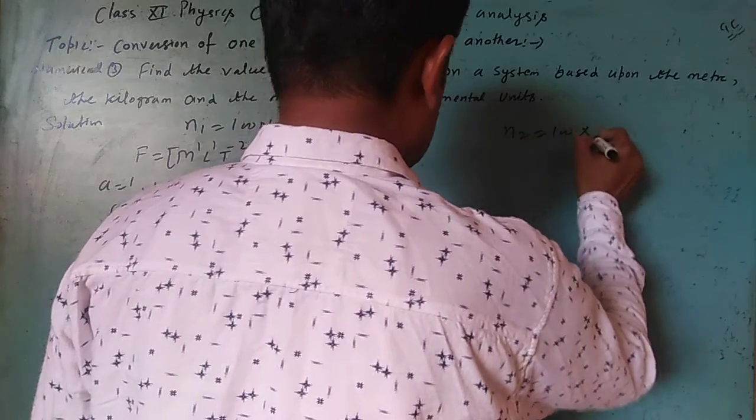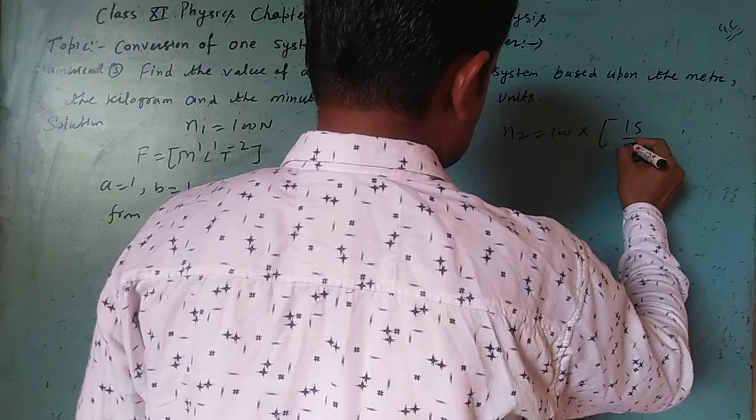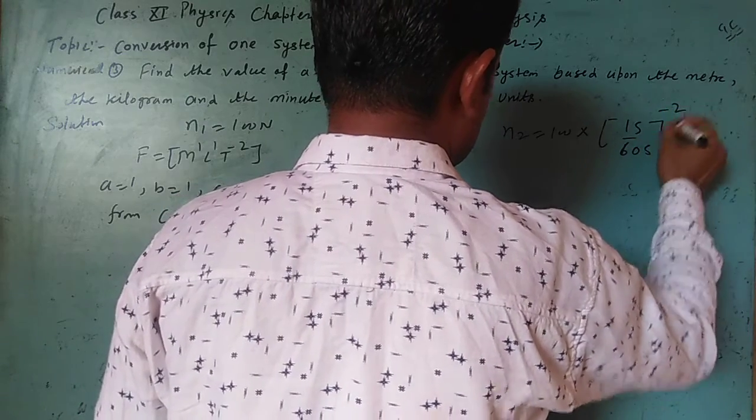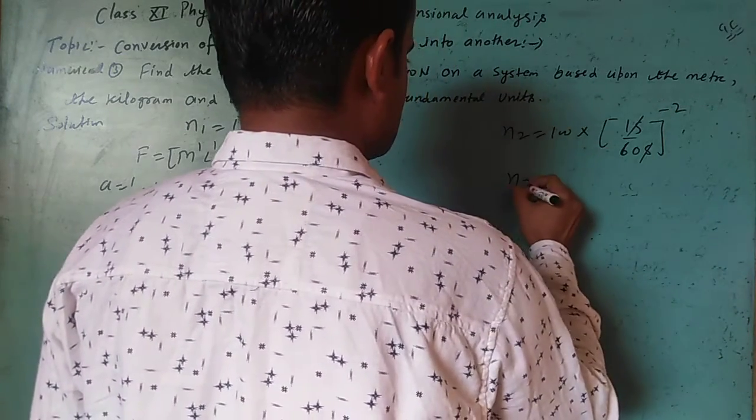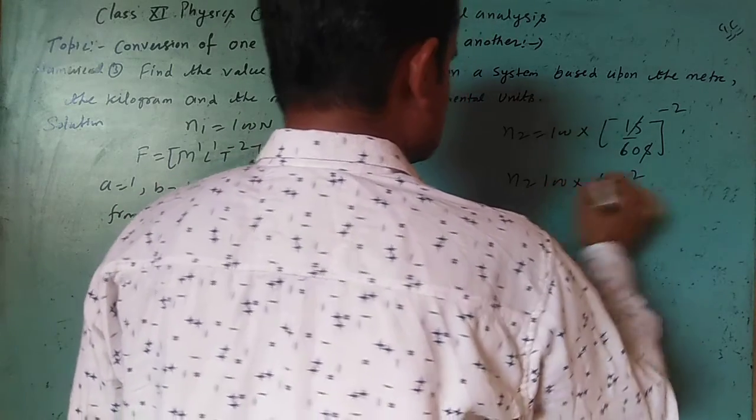× (1 second / 1 minute)^-2. Since 1 minute = 60 seconds, this becomes (1/60)^-2. Due to the power of -2, this reverses: n2 = 100 × 60²